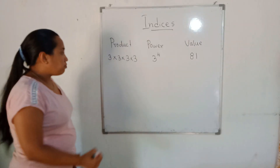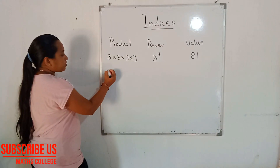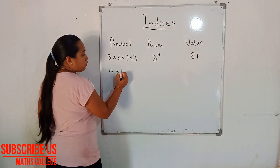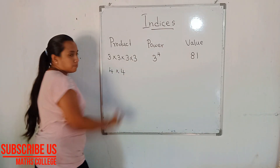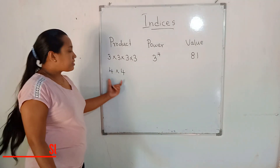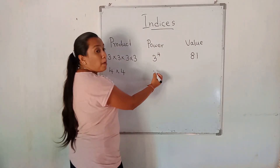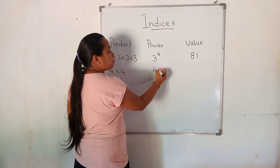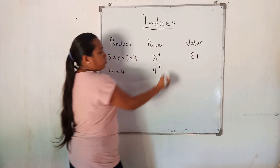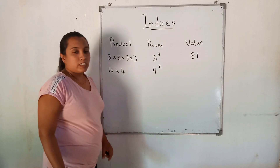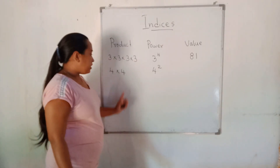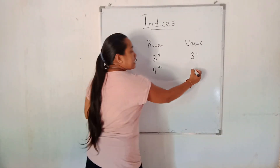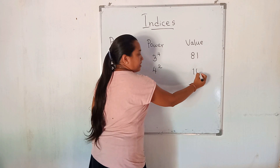Another example: 4 multiplied by 4 is the product. As a power, that is 4 to the power 2. The value is 4 multiplied by 4, which is 16.